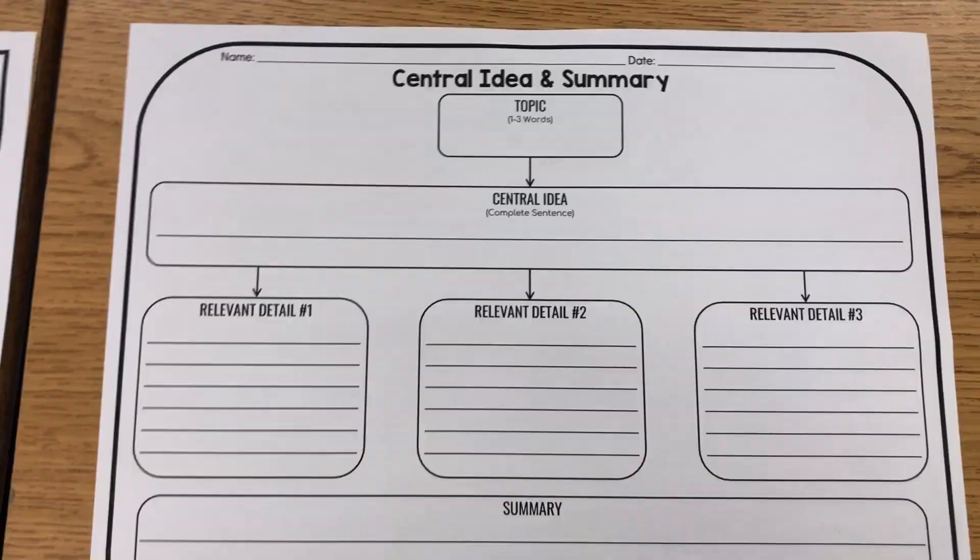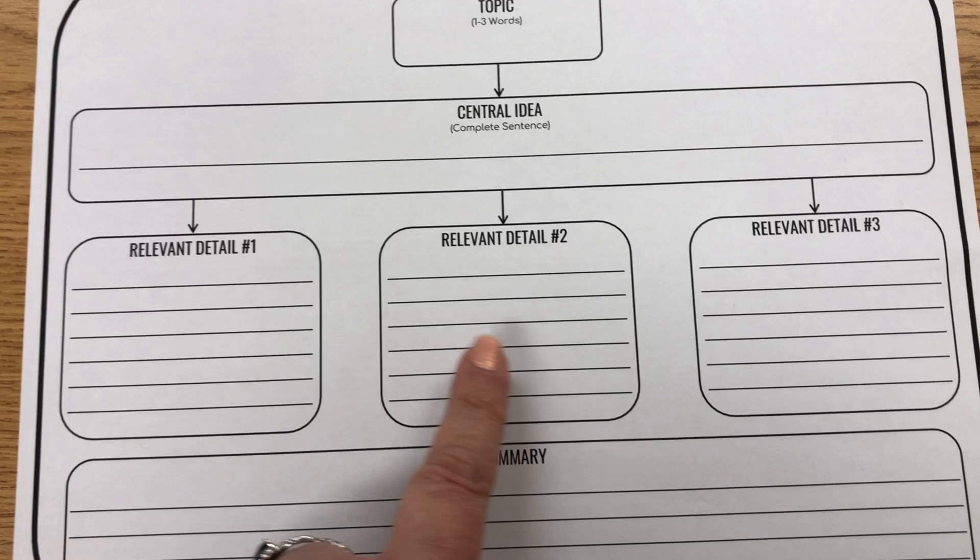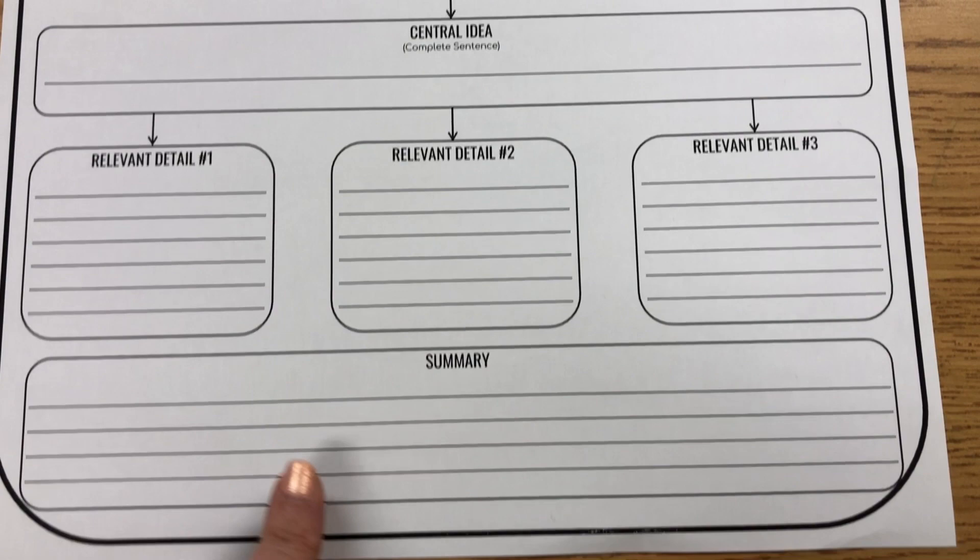With my advanced group, once they finished their assessment or the first part of it — this is a two-day assessment — they went ahead and worked on completing a central idea and summarizing graphic organizer. After checking their reading reciprocal teaching organizer from last week, I noticed they needed more practice with recalling how we write a summary. The graphic organizer has them write the topic, the central idea using that topic, three relevant details, and then use those to write the summary.